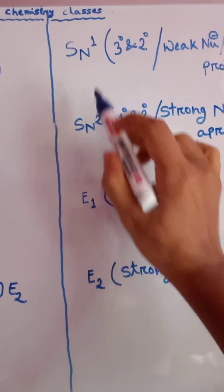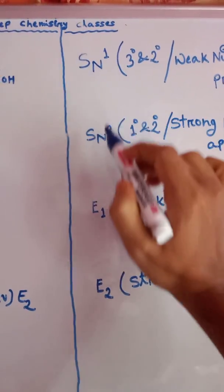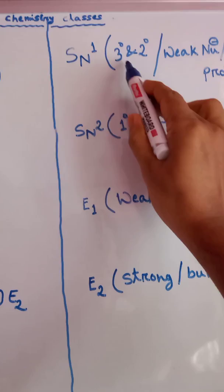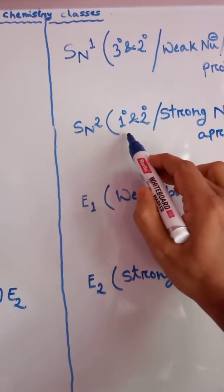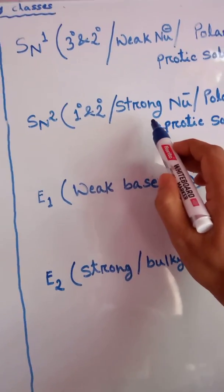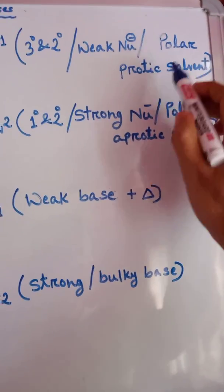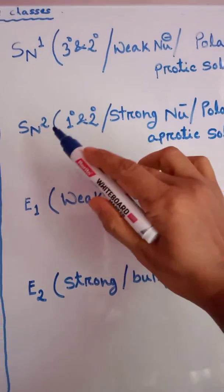If we compare SN1 and SN2, in SN1, substrate is 3 degree, but in SN2, substrate is 1 degree. In SN1, weak nucleophile present, but in SN2, strong nucleophile present. In SN1, polar protic solvent, and in SN2, polar aprotic solvent is used.